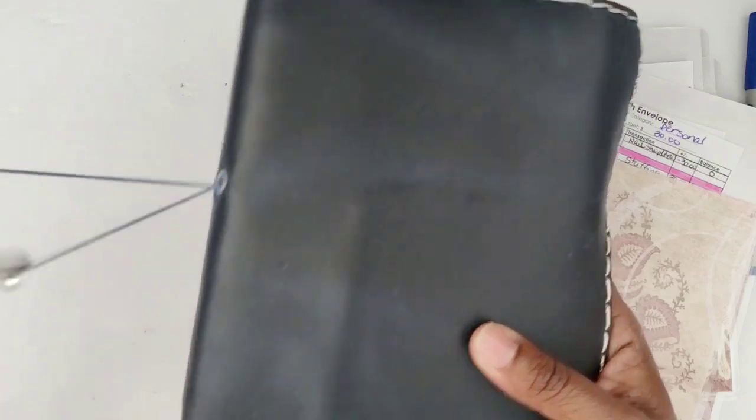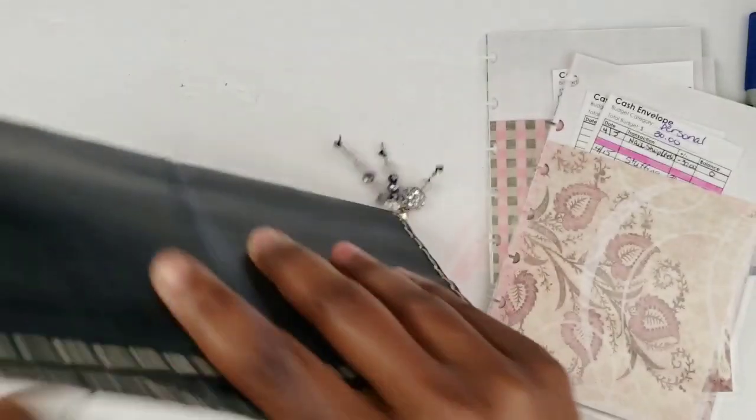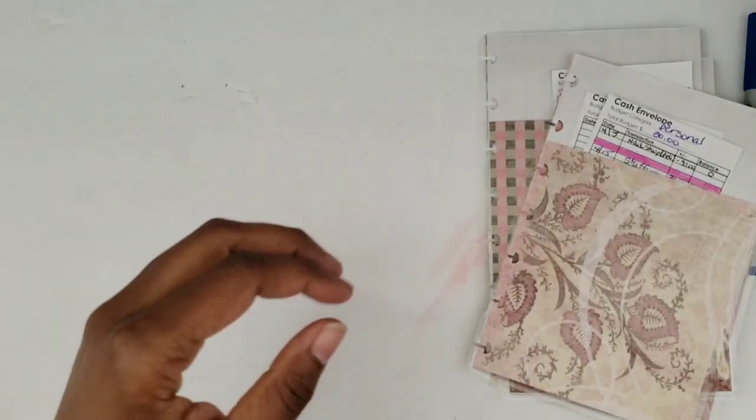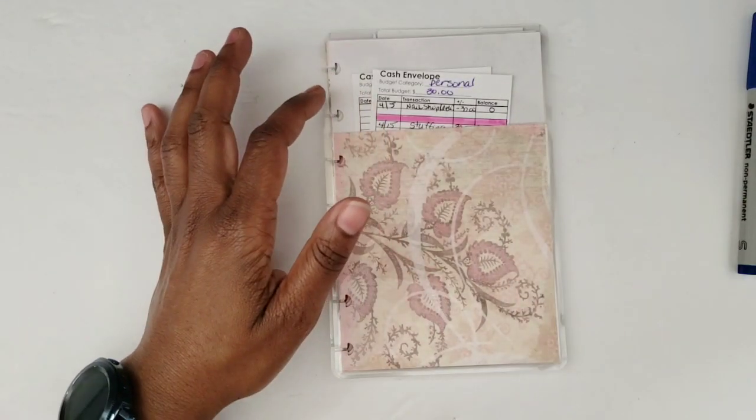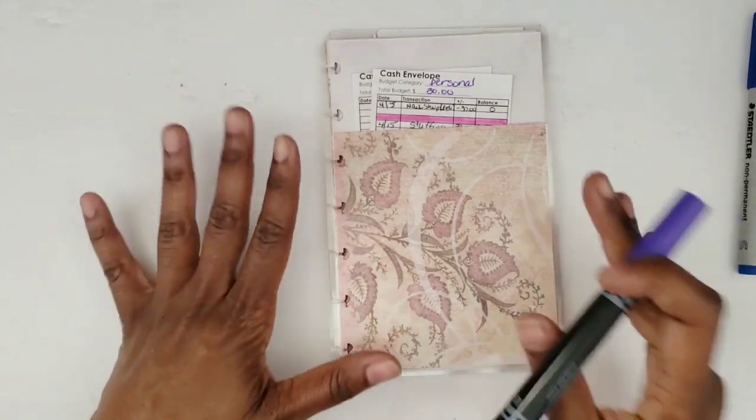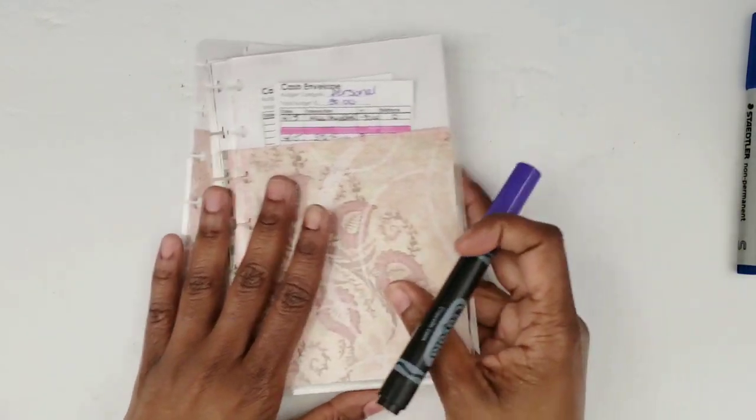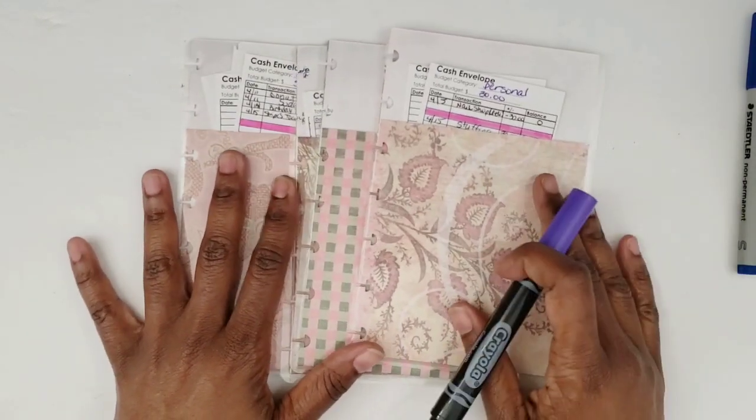Let's go ahead and get into it and I'll explain in more detail. I didn't get my paycheck as I anticipated and I decided I was going to do my cash stuffing every two weeks based on my paycheck that I would get every two weeks.